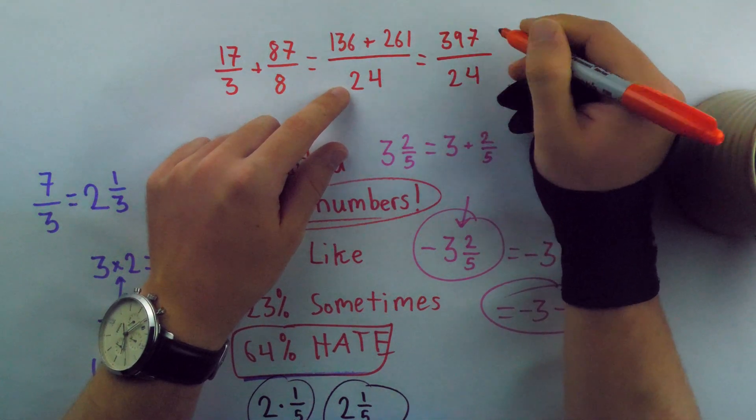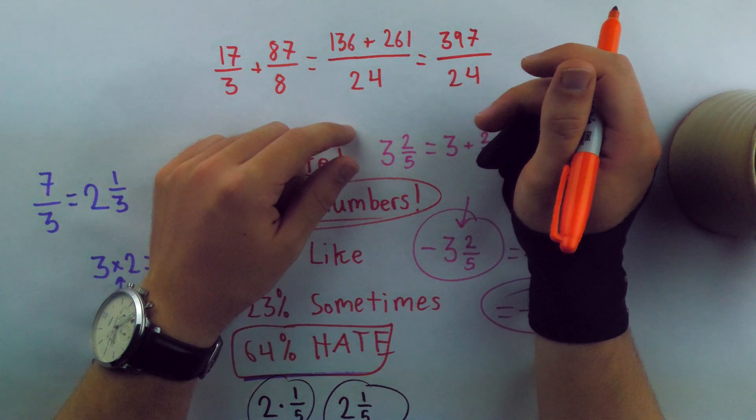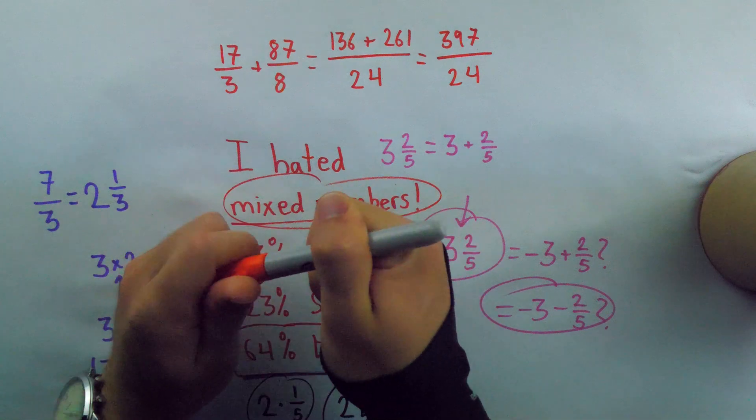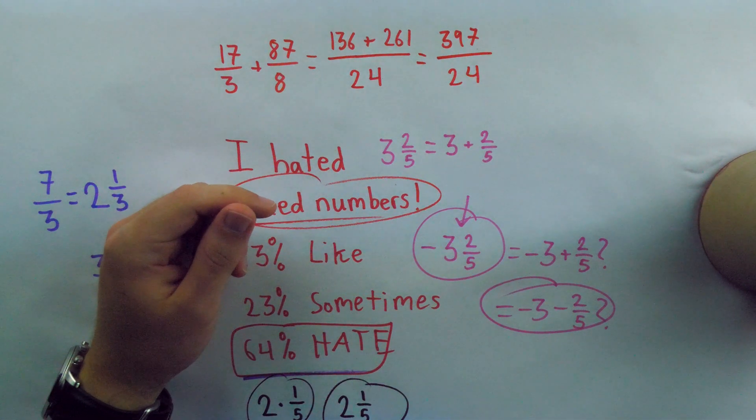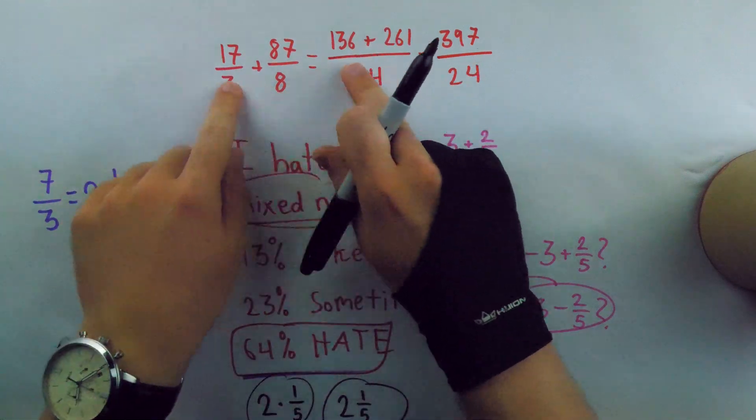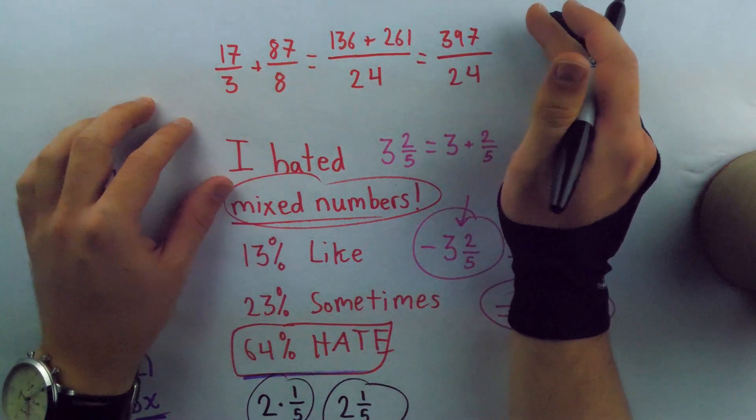Okay, so there we go. 397 over 24. And at a glance, how big is this? I mean, I don't know. It's like, what, 10, 20, somewhere between 10 and 20. Now let's try doing this again, but with mixed numbers, and think about how easy it would be for someone who's not a grizzled veteran like me to make a mistake doing it this way in comparison to the mixed number way.